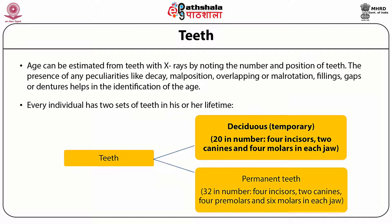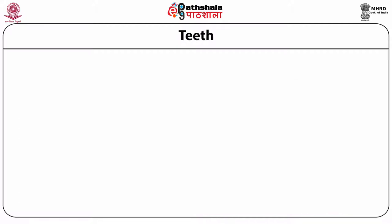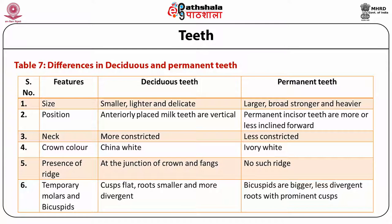The deciduous teeth are 20 in number — 4 incisors, 2 canines and 4 molars in each jaw. The permanent teeth are 32 in number — 4 incisors, 2 canines, 4 premolars and 6 molars in each jaw. Age can be determined based on differences in features of deciduous and permanent teeth including size, position, neck, crown colour, presence of ridges, and temporary molars and bicuspids.